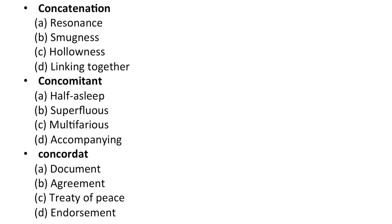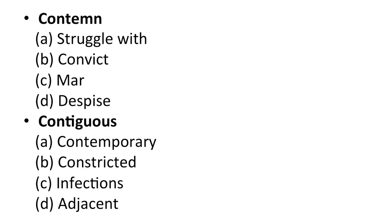Next is concatenation — choices are: A — resonance, B — smugness, C — hollowness, D — linking together. Next word concomitant — A — half sleep, B — superfluous, C — multifarious, D — accompanying. Next word concordant — A — document, B — agreement, C — treaty of peace, D — endorsement.